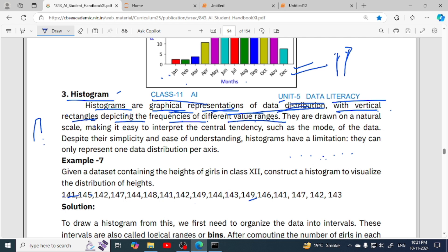These rectangles depict the frequency of different value ranges. For example, 141 to 145 range has how many products - that particular interval has how many products - that can be shown using histogram easily. If we talk about bar chart, bar chart shows different categories.